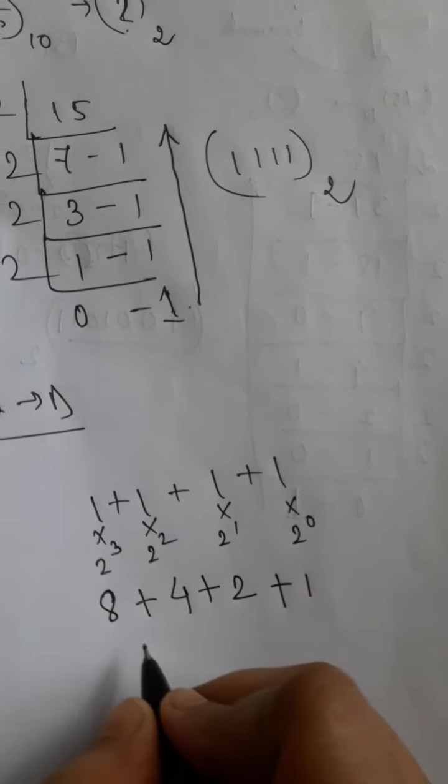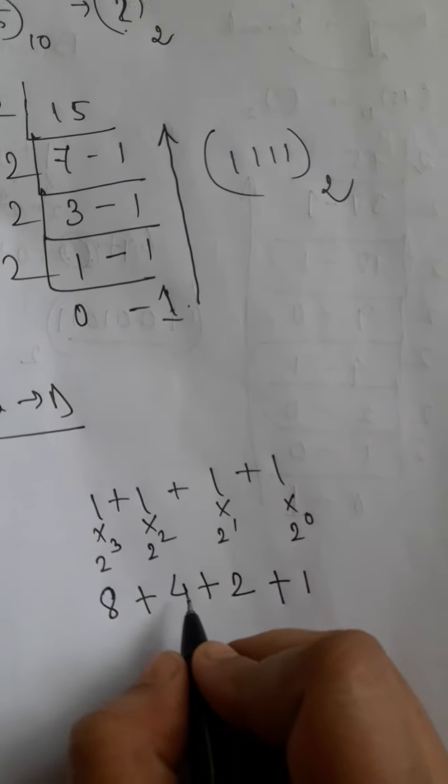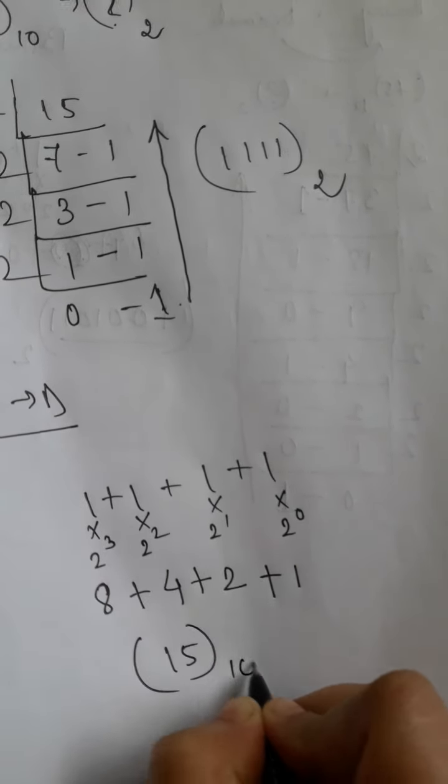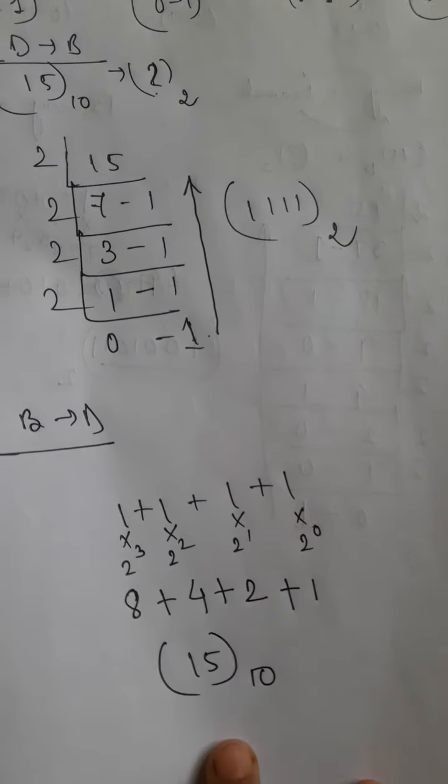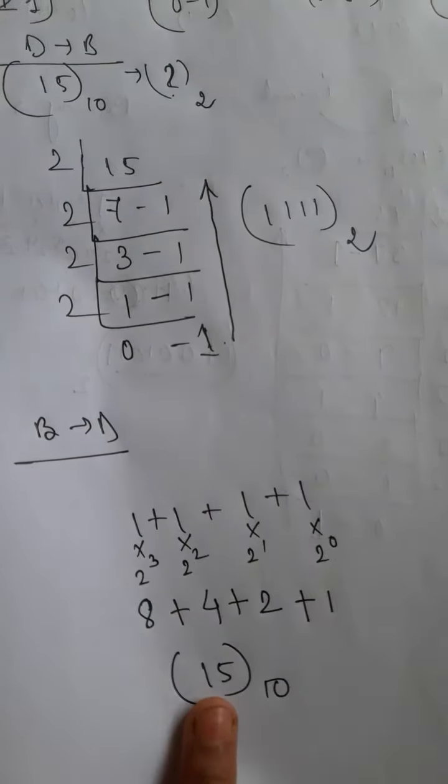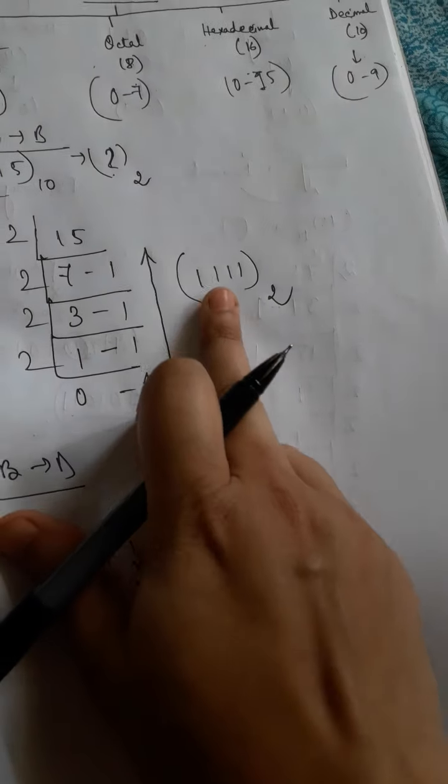Now add these all: 8 plus 4 is 12, plus 2 is 14, plus 1 is 15. We can see or we can prove that 15 is the decimal equivalence of binary 1111.